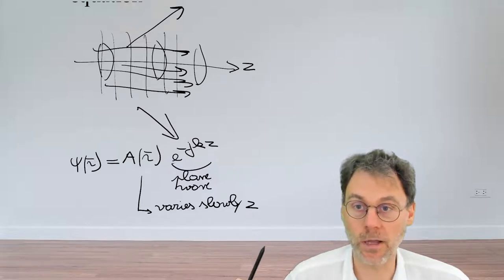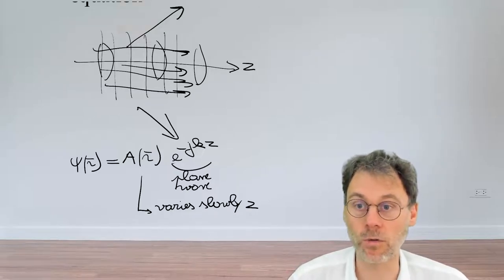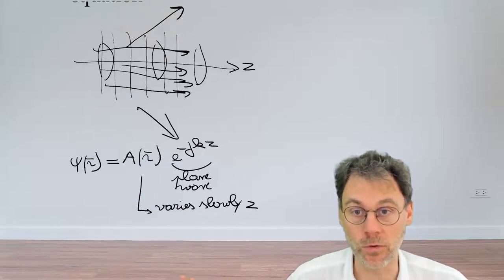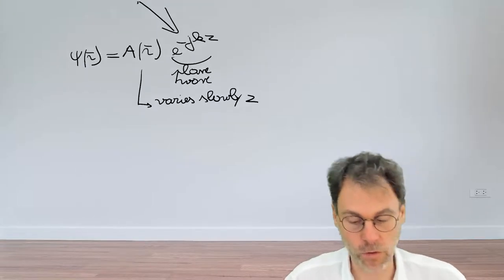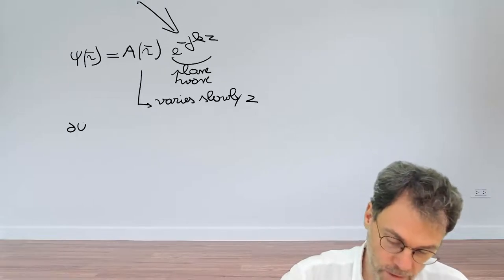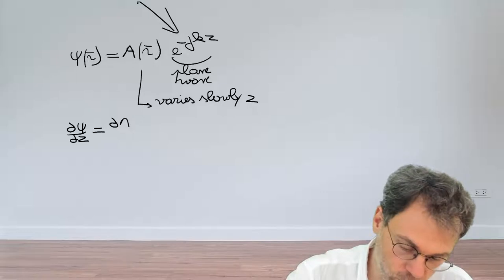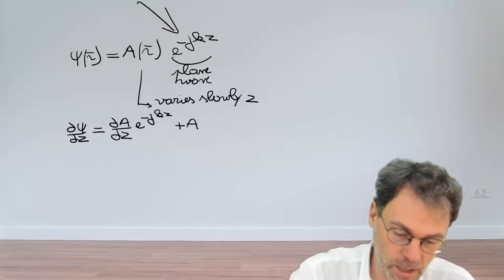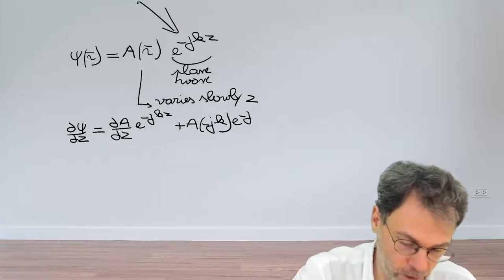We also need a way to figure out how to mathematically describe that this envelope A varies slowly as a function of z. But for starters, I suggest you pause the video and try to calculate the second order derivative of ψ with respect to z, so that we can plug this into the Helmholtz equation. Let's take the first order derivative to start with. So we have dψ/dz. It's a product of two factors, so we first take dA/dz and keep our exponential, and then we keep A and take the derivative of the exponential, picking up a factor minus j·k.